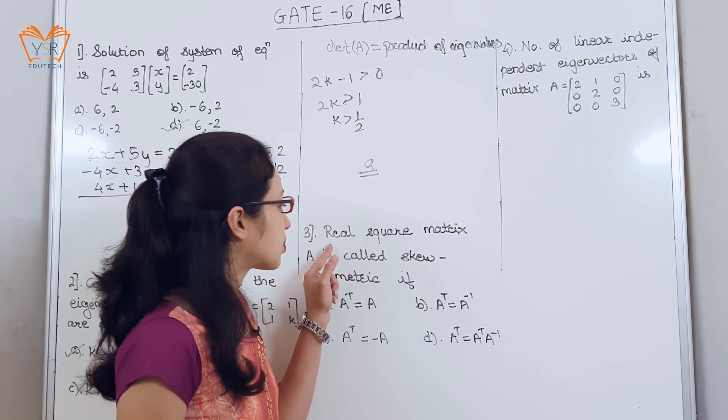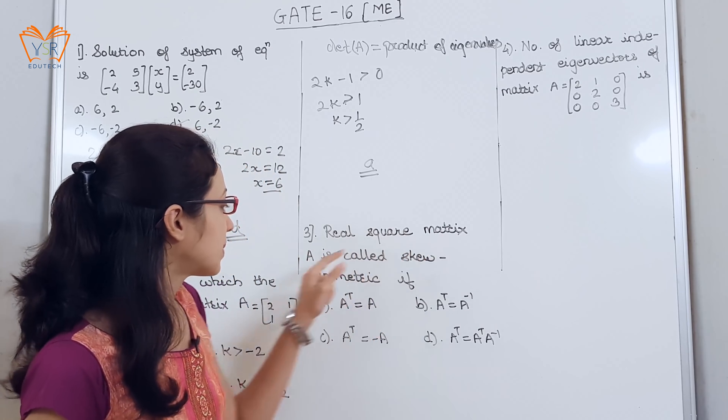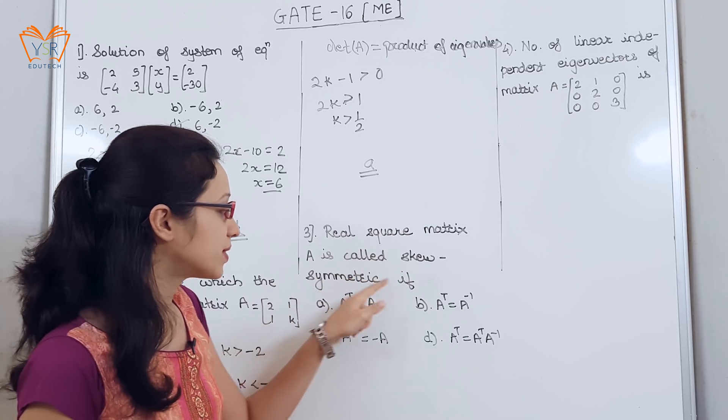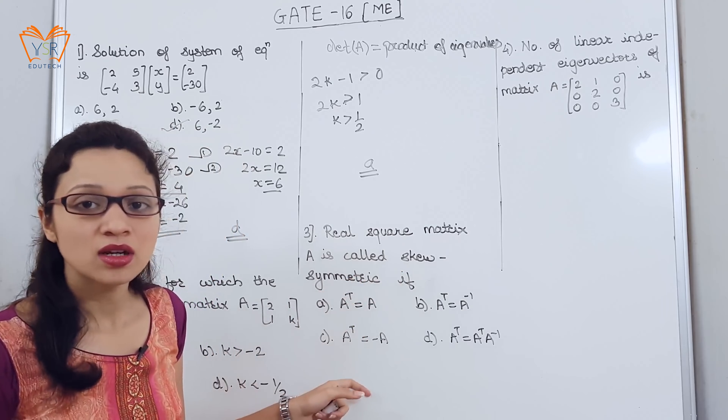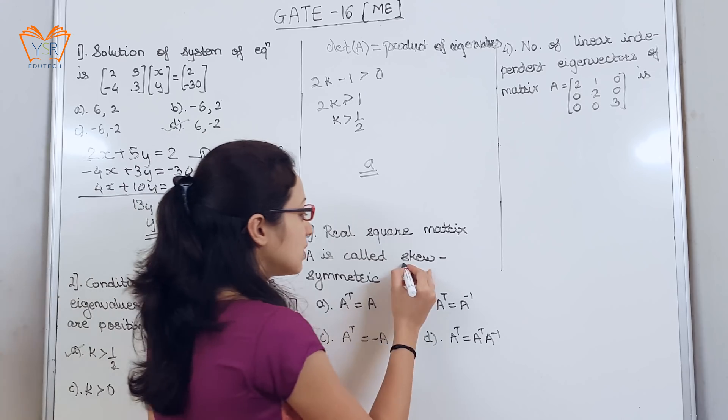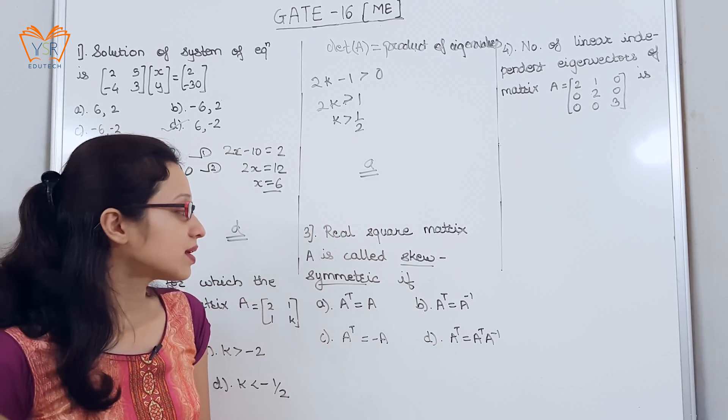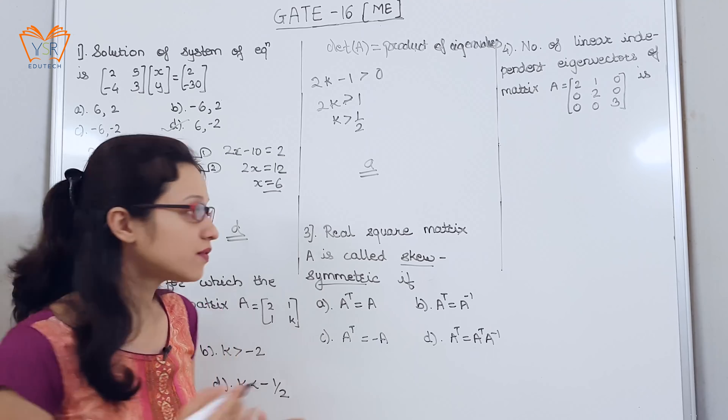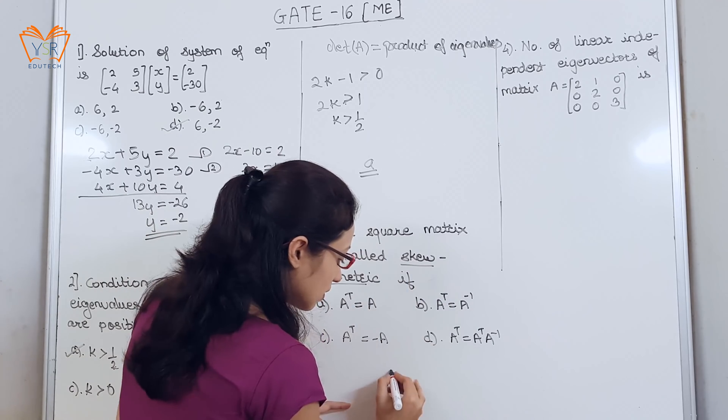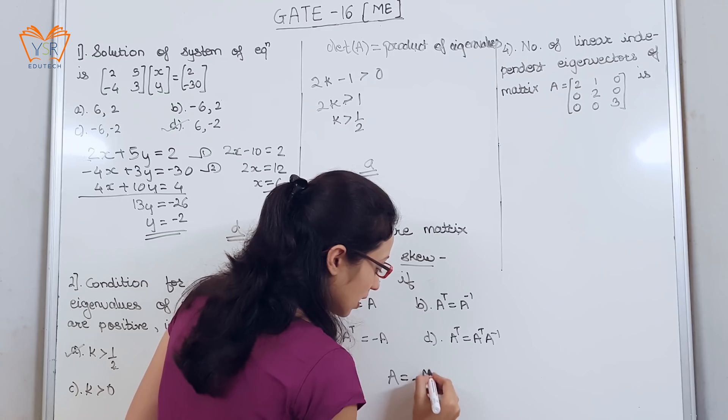The third example: real square matrix A is called skew symmetric if, and they have given four options. Now, we know the definition of skew symmetric that any square matrix is called skew symmetric if A is equal to minus A transpose.